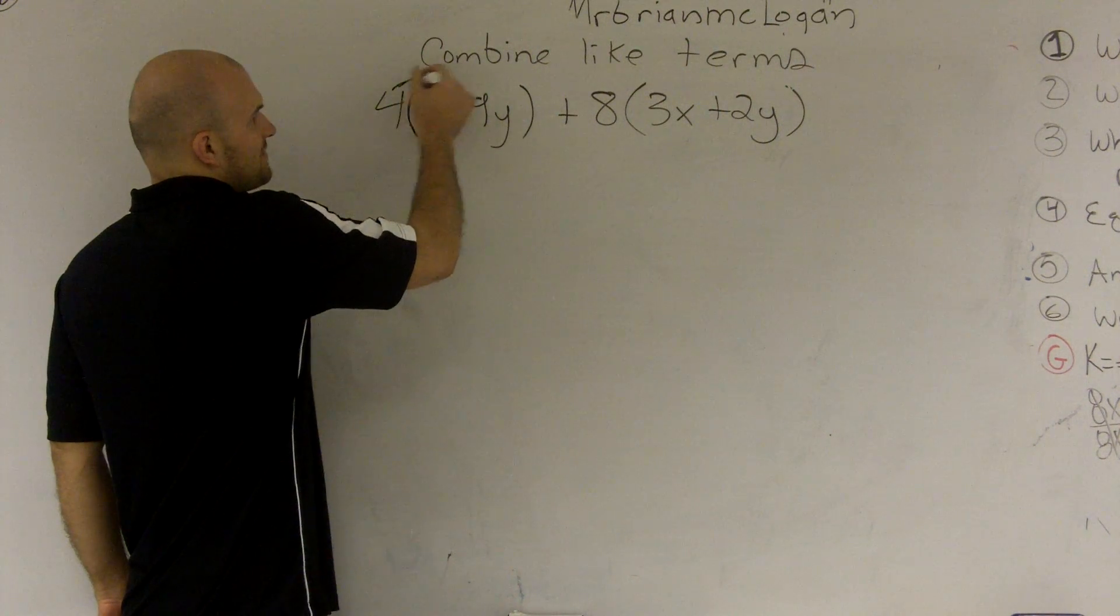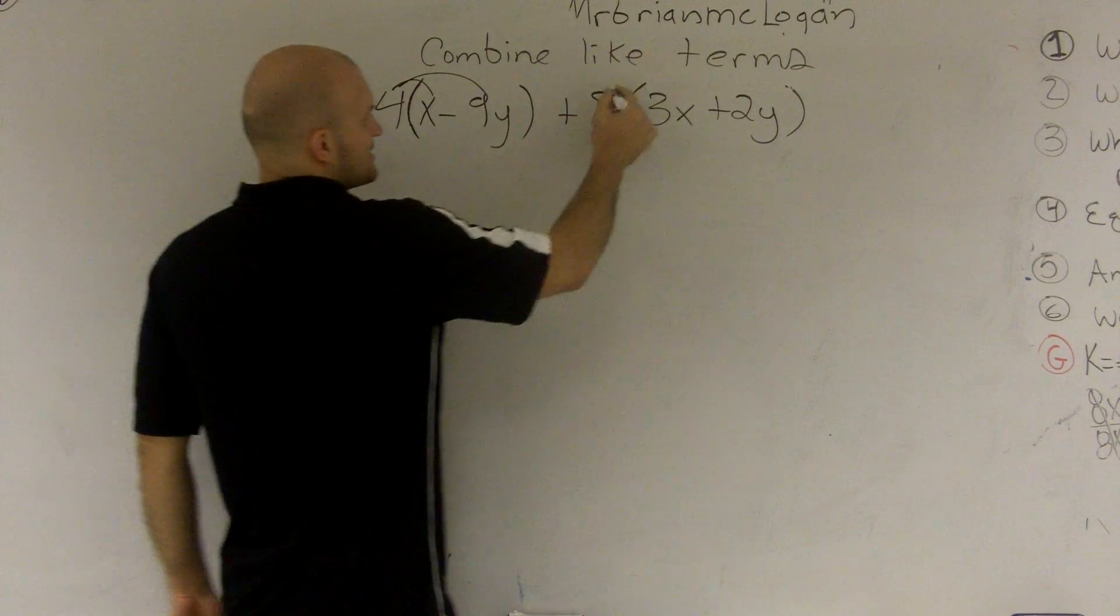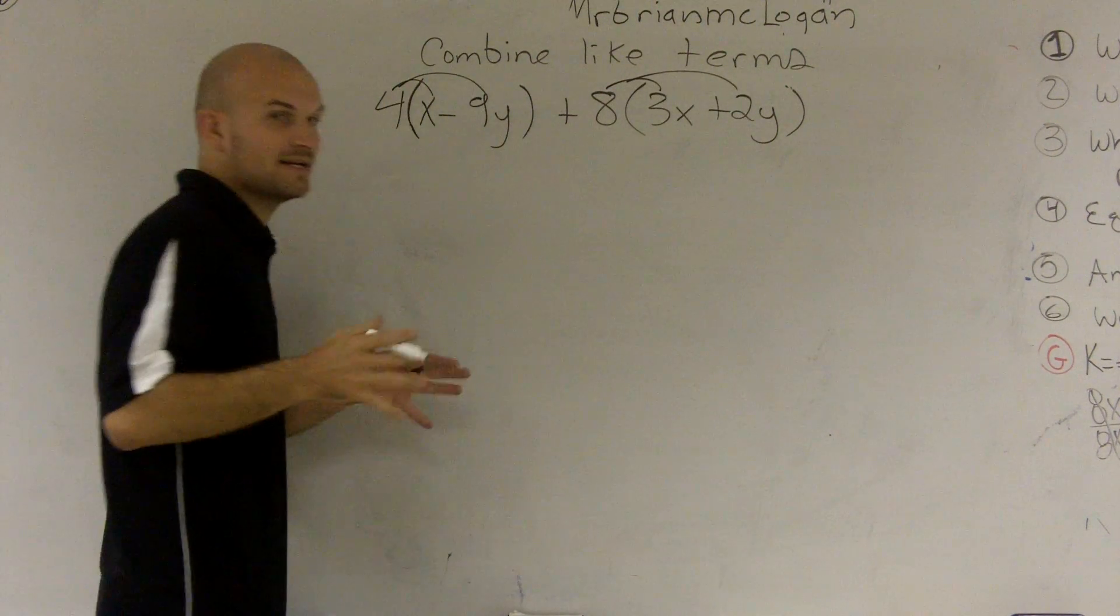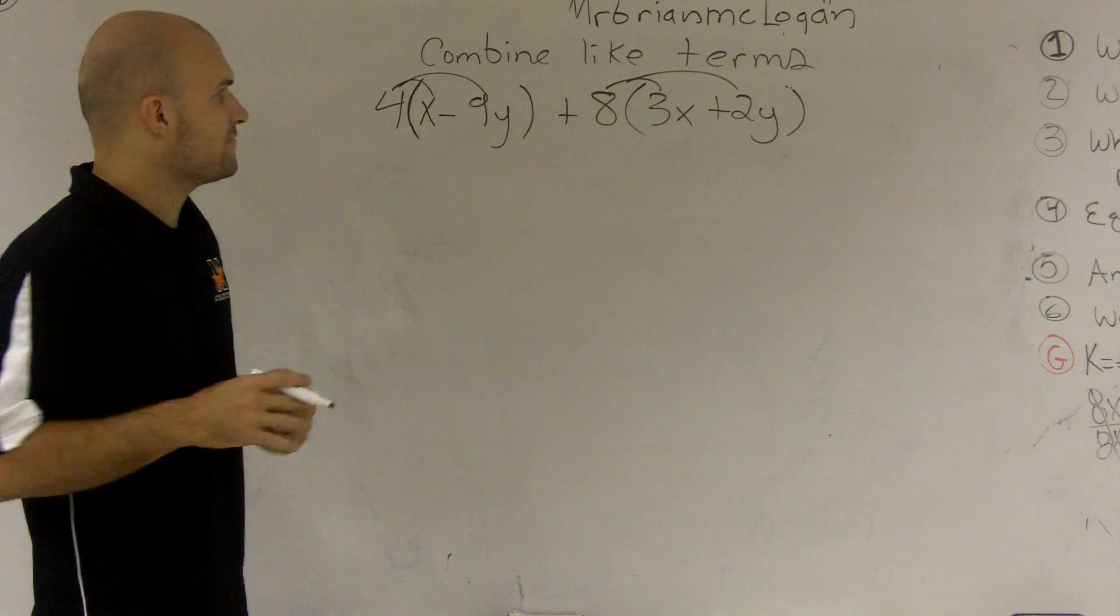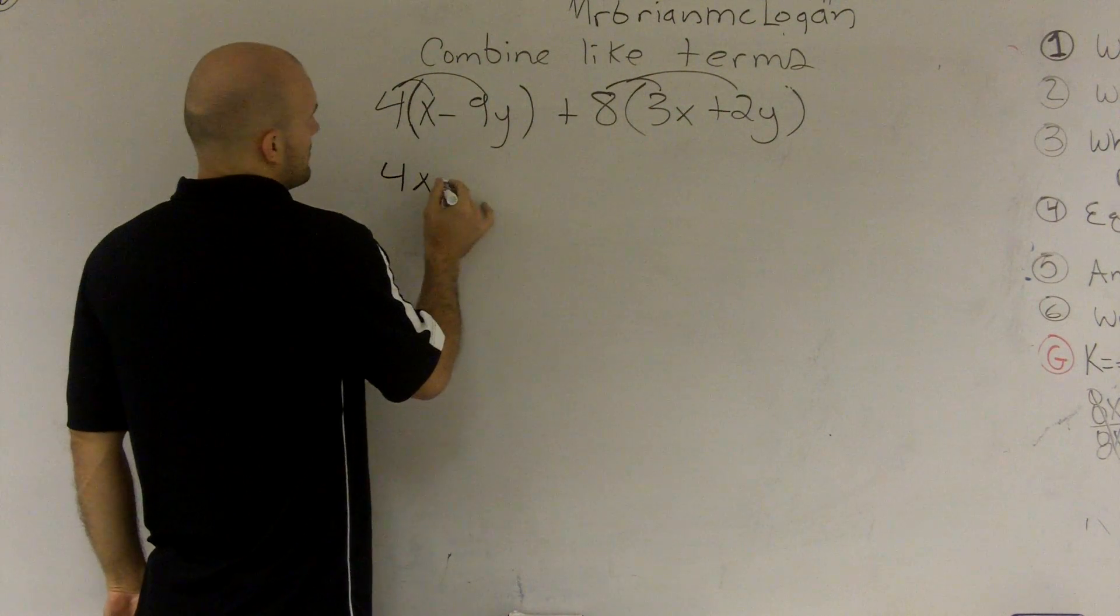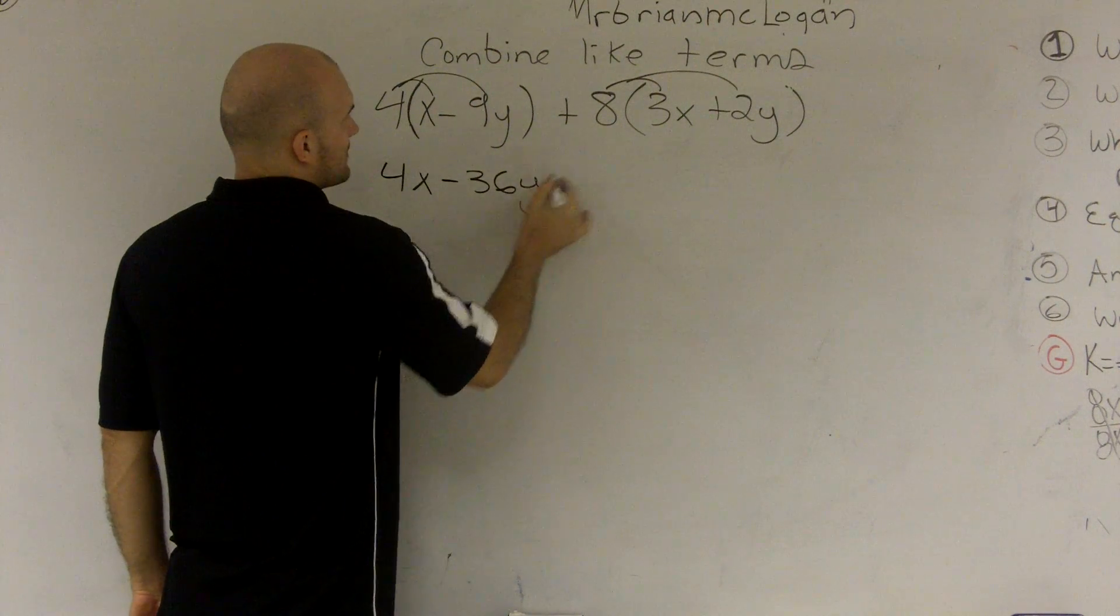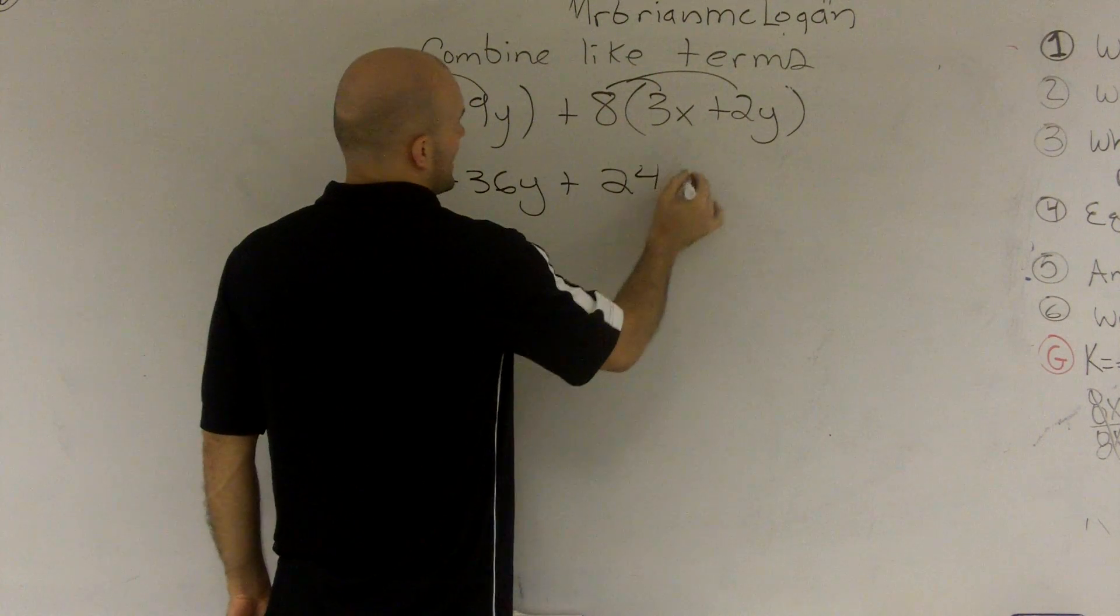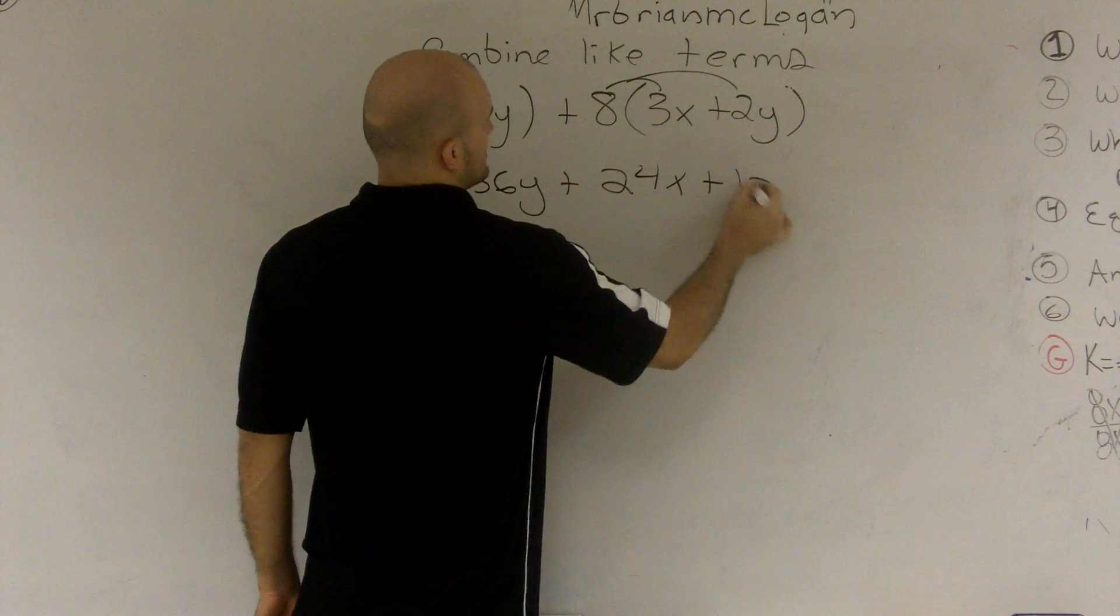What I mean by the distributive property is that I have this 4 outside the parentheses and this 8 outside the parentheses. I'm going to multiply that 4 and the 8 into every single term. So I'm going to get 4x minus 36y plus 24x plus 16y.